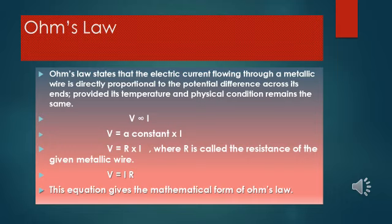The ratio of V by I is always a constant and this is the resistance value of that particular metallic wire.